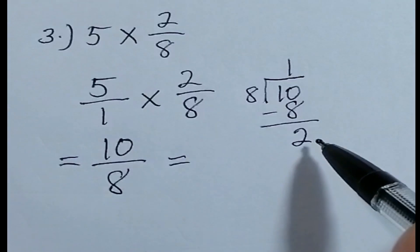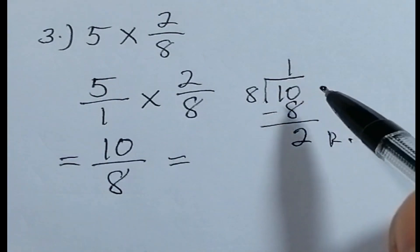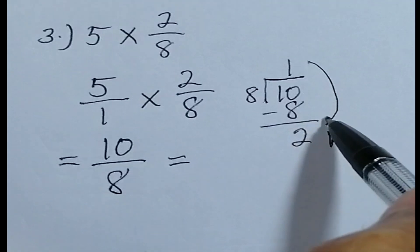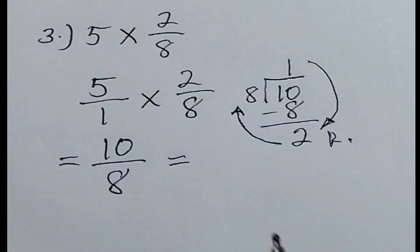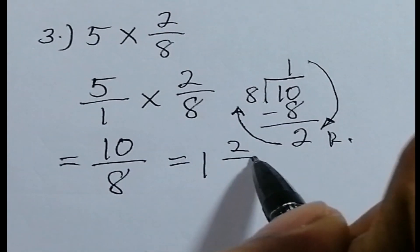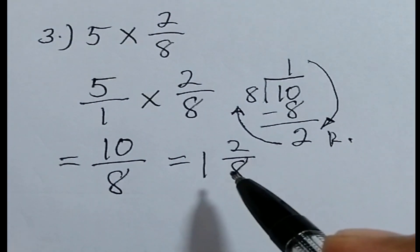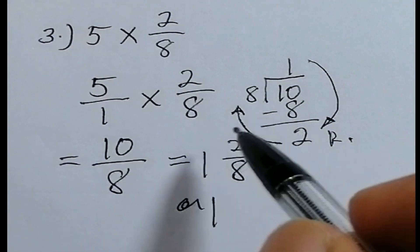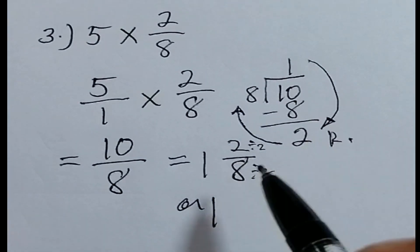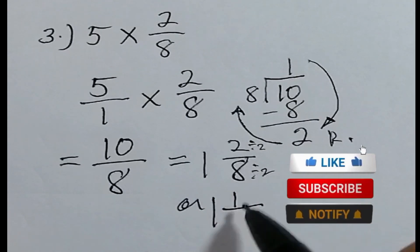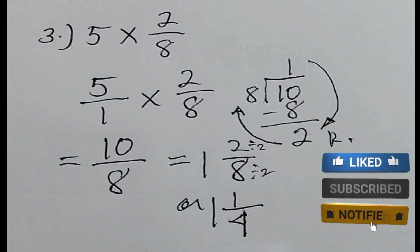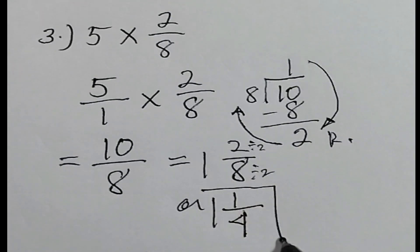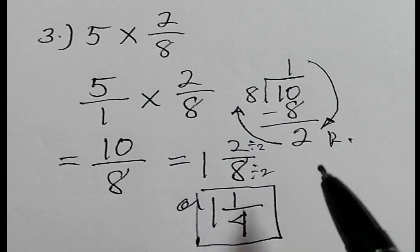And then, pwede natin i-reduce siya sa lowest term, di ba? I-divide natin yung ten, numerator sa loob, and then denominator sa labas is one. One times eight, eight. Subtract, two. Meron tayong remainder dito na two. Paano ito sulat? Sa mixed fraction. First is, ang whole number natin is yung quotient, yung one. So ang sulat natin is one, two over eight. So this is our answer. O pwede rin natin ulit i-reduce siya. One, ito divided na, i-divide na sa two. So magiging one over four. Two over eight at saka one over four ay parehas lang sila. Nireduce natin sa lowest term. So this is our answer. One and one over four.